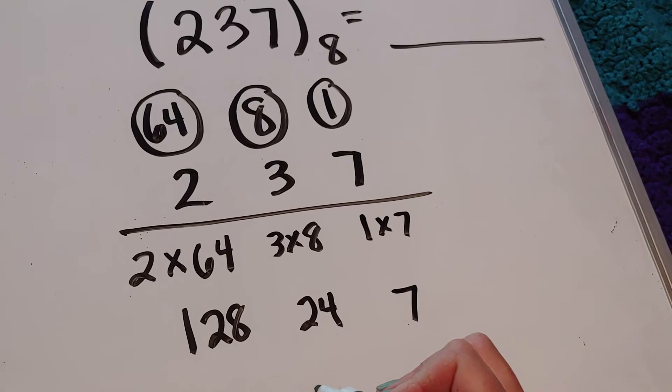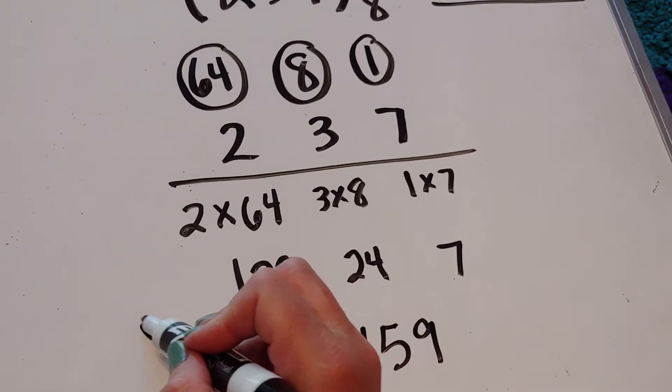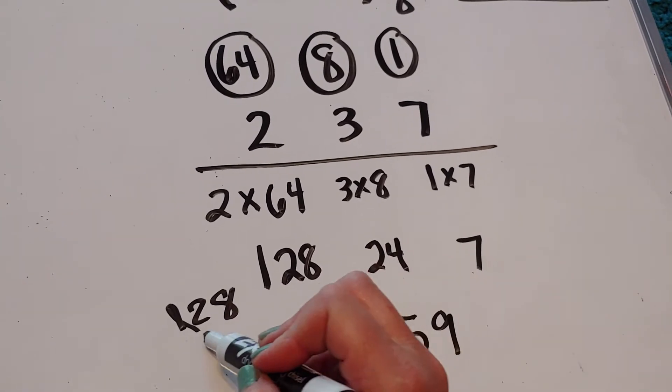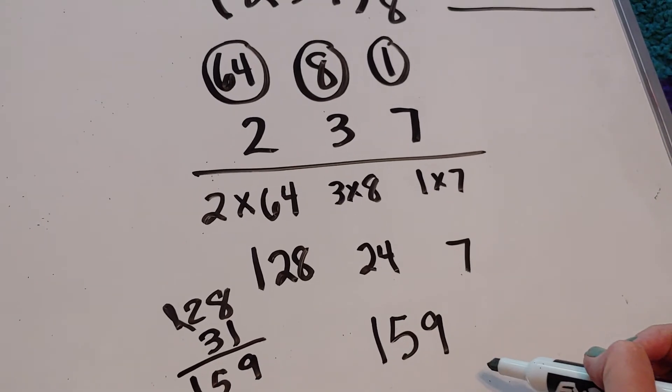All right, and I think I'm going to get 159. Let's see if that's true. 128 plus 24 and 7 is 31. Woo-hoo! My arithmetic was right.